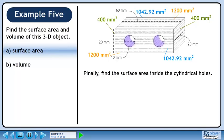Finally, find the surface area inside the cylindrical holes. The formula for the lateral area of a cylinder is A equals 2πRH. Plug in the radius and height of the cylinder. The diameter of the hole is 10 mm, so the radius is half that value, 5 mm. The height of the cylinder is the same as the depth of the block, 20 mm. The surface area is 628.32 mm².